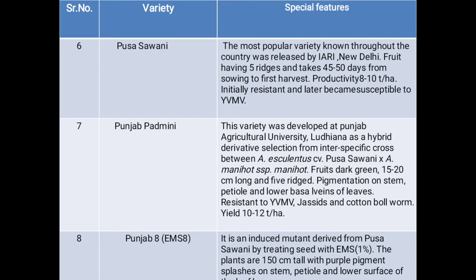Punjab Padmini was developed at Punjab Agricultural University, Ludhiana, as a hybrid derivative selection from an interspecific cross between Abelmoschus esculentus cultivar Pusa Sawani and Abelmoschus manihot species manihot. Fruits are dark green, 15 to 20 cm long and 5-ridged, with pigmentation on stem, petiole and lower basal veins of the leaf. Resistant to yellow vein mosaic virus, jassids and cotton bollworm. Yield is 10 to 12 tons per hectare.